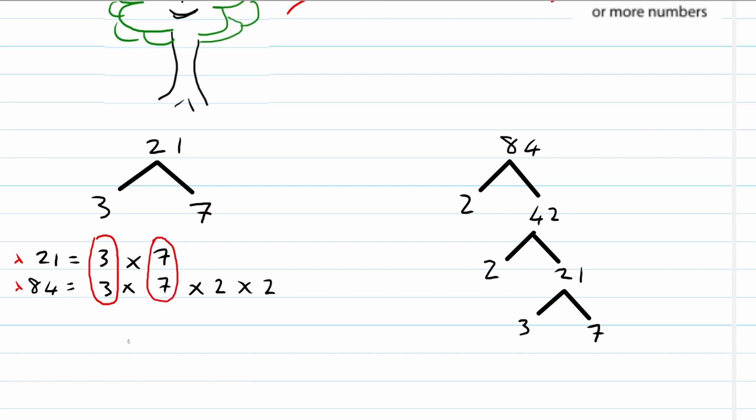So the highest common factor for 21 and 84 is 3 times 7, which is equal to 21. And this will be the highest common factor.